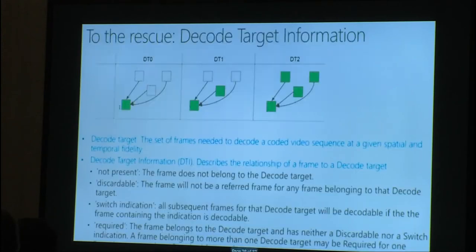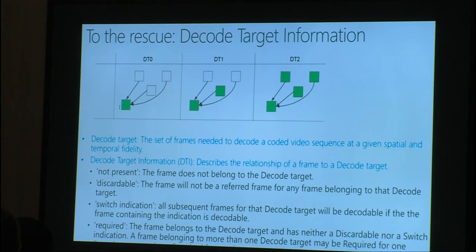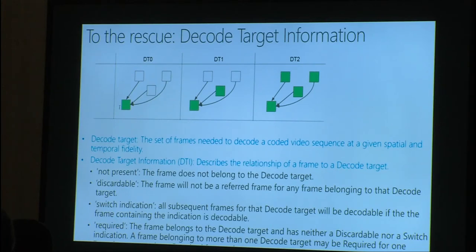To help the SFU do that, we implemented Decode Target Information. This is not at the codec or bitstream level, but in the RTP layer. It helps the SFU decide which packets to keep and which to discard, or when to switch layers, by reading only the RTP header — without reading the entire bitstream. So the SFU can quickly determine whether the current packet belongs to the resolution the viewer requested.